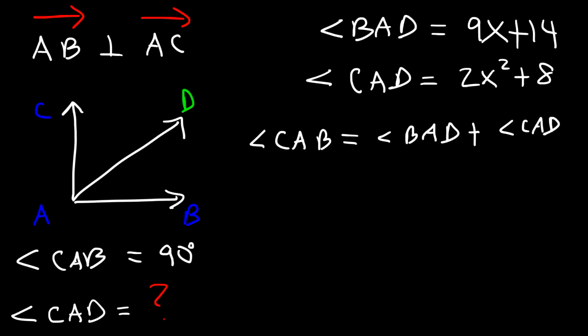For instance, let me use a different color. Let's say BAD is 30, and let's say CAD is 60. Then CAB has to be the total, which is 90. And so that's why we can say that CAB, the total angle, is the sum of angle BAD plus angle CAD. Now, we can replace angle CAB with 90 because that's what it's equal to. BAD, we know it's 9x plus 14, so let's replace it with that. And CAD is 2x squared plus 8.